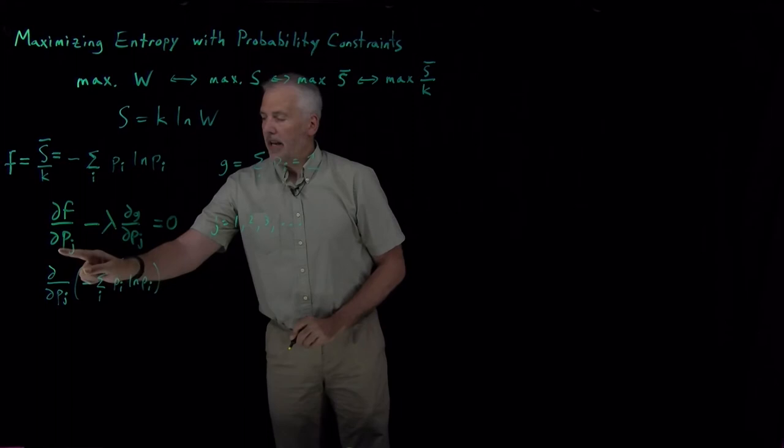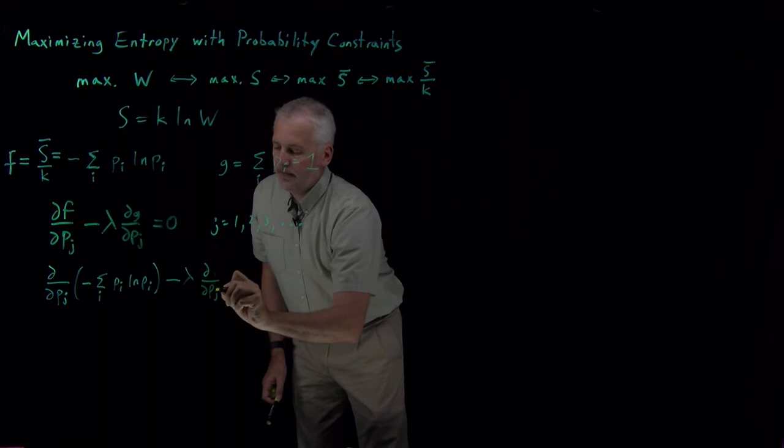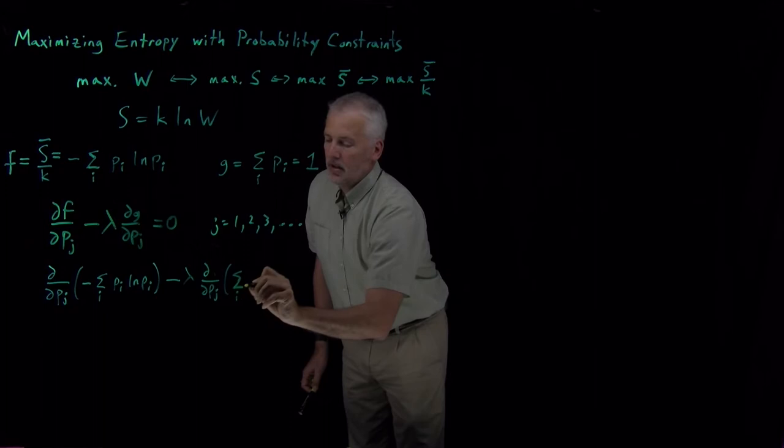And I want to subtract lambda times the derivative with respect to P sub j of the constraint, which is just the sum of all the probabilities. So that's the thing that we want to be equal to zero.